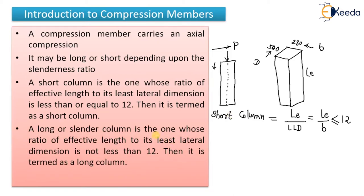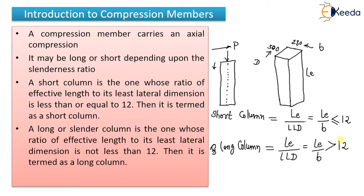Now which one will be the long column? A long or slender column is one whose effective length to the least lateral dimension — LE by B — is greater than 12, then it is called a long column. Regarding failure: short columns will generally fail by crushing, while long columns will generally fail by buckling. You have to remember this.